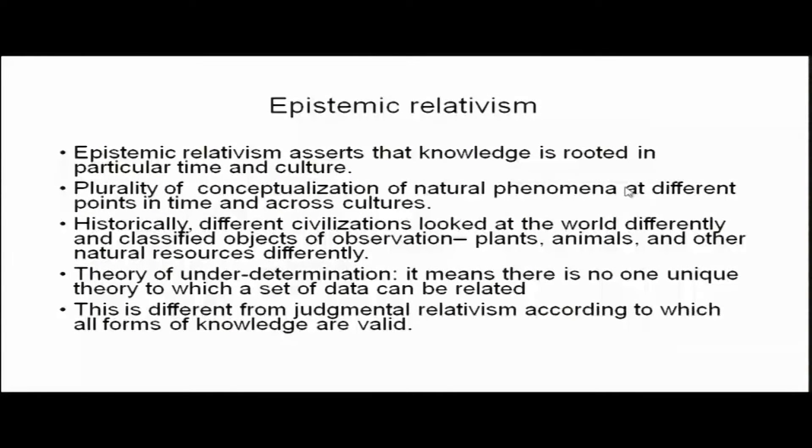The sociology of scientific knowledge is based on epistemic relativism. Epistemic relativism asserts that knowledge is rooted in particular time and culture. There is plurality of conceptualization of natural phenomena at different points in time and across cultures — that is, there are more than one way of conceptualizing natural phenomena, and this has been done in different civilizations and cultures. Credit must go to Thomas Kuhn, who recognized that scientific knowledge should be located and related to its historical context. This opens up the possibility of looking at knowledge systems produced by many other civilizations like India and China.